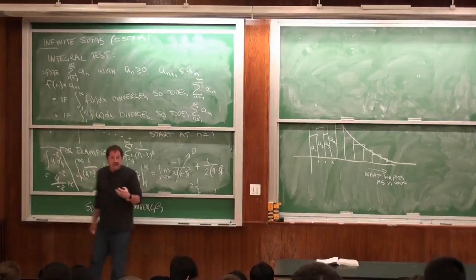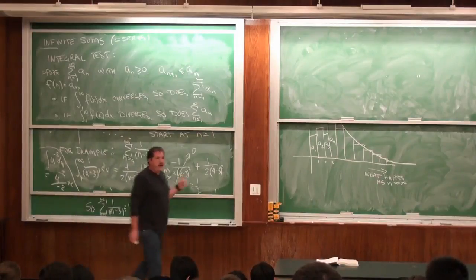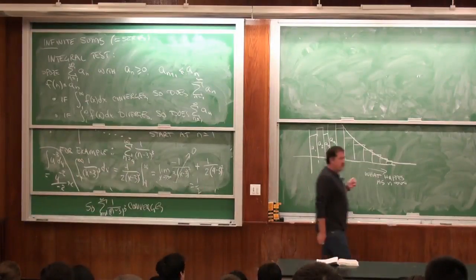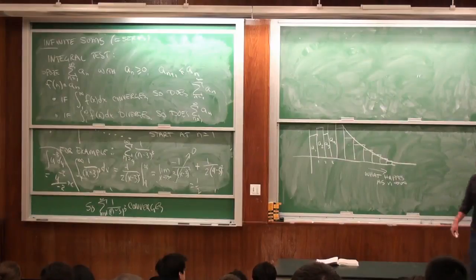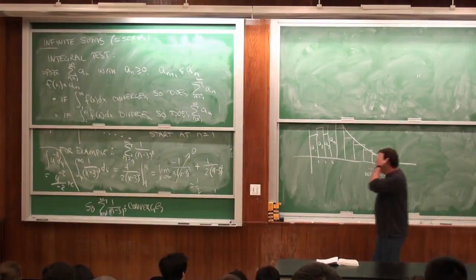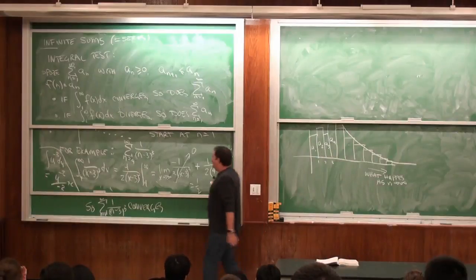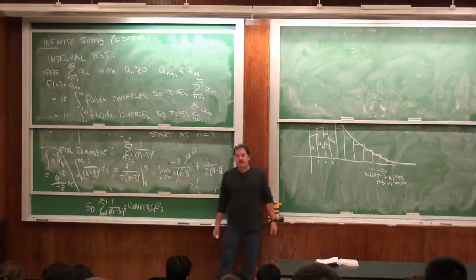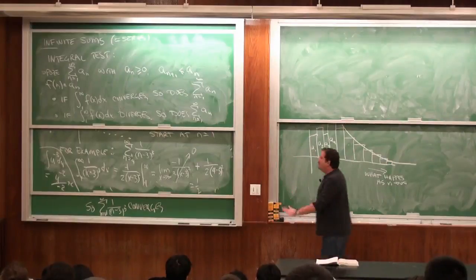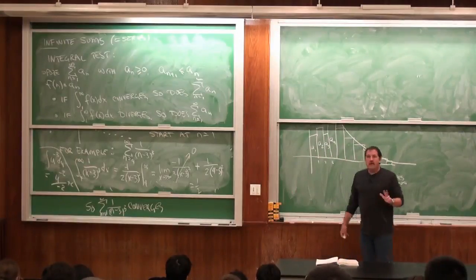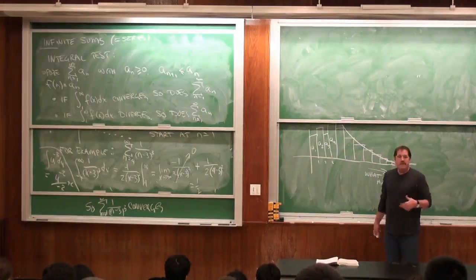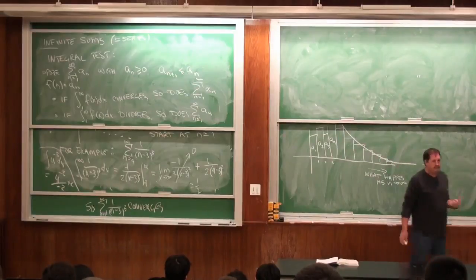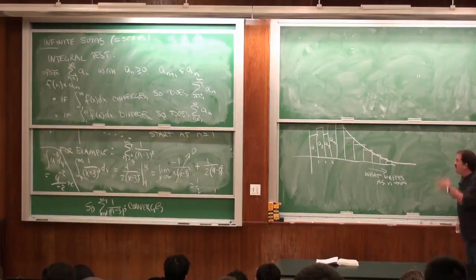We can squeeze a little more information out of the integral test. Say we want to know — we know that the sum from n going to infinity of 1 over (n minus 3)³ adds up to something, and maybe we want to get a sense of what it adds up to.